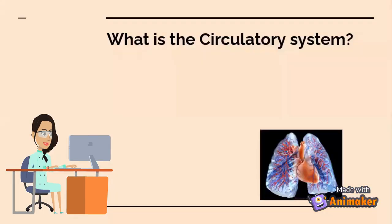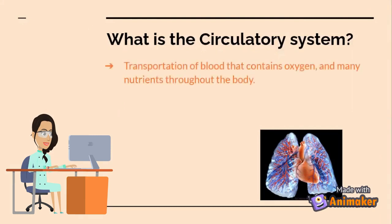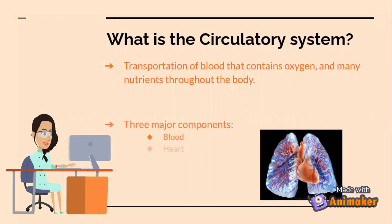What is the circulatory system? The circulatory system is a transportation of blood that contains oxygen and many nutrients throughout the body. The three major components are the blood, heart, and your blood vessels.